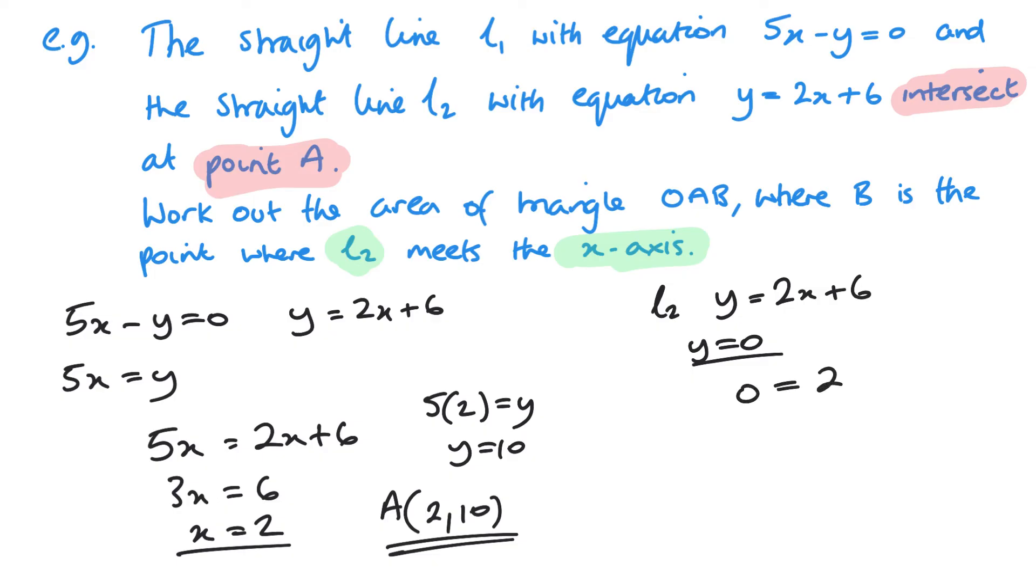So that gives me 0 equals 2x plus 6. Negative 6 equals 2x. So x is going to be equal to negative 3. So the coordinates of B are negative 3, 0.